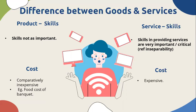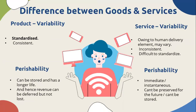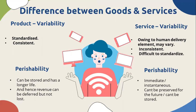Services are expensive compared to products. When we say variability, a product has a standard and is consistent because the design is fixed. But when we talk about services, owing to the human delivery element, it can vary — hence it is inconsistent and a little difficult to standardize. We can definitely have standard operating procedures, but the human angle will change every process.